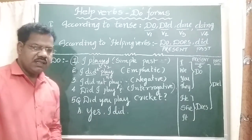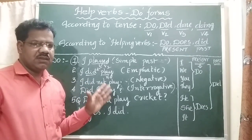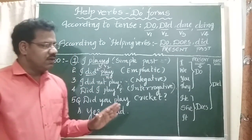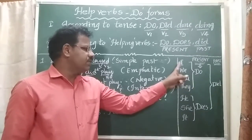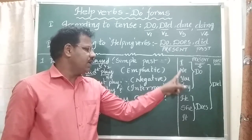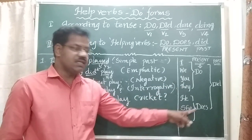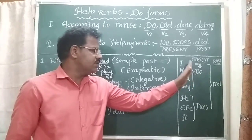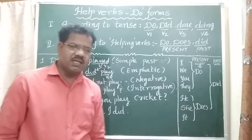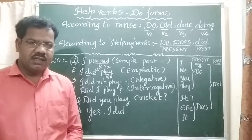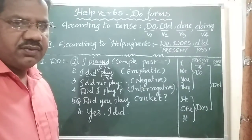These are regarding Do Forms. Do Forms: Do, Does, Did. Do with I, we, you, they. Does with he, she, it. Did for past. I think you have understood. Thank you, everyone.